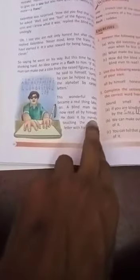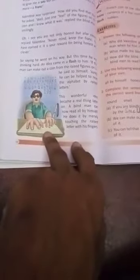So now you can see the blind man today by raised figure, by touching the alphabet they can understand which is A, which is B. So blind man now can read by himself, they are reading by merely touching the raised letters with his fingers.